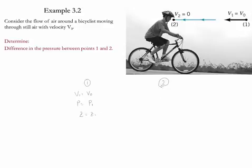For point two, the velocity is equal to zero since it's a stagnation point. For pressure, point two is p2, and then the height is going to be equal to z2.